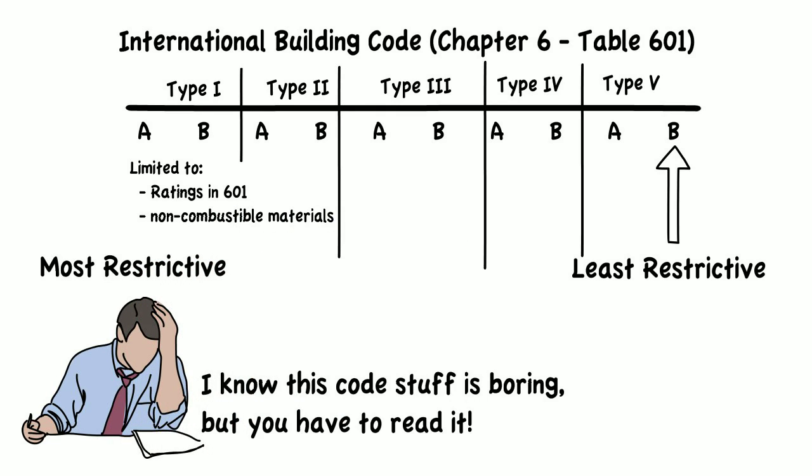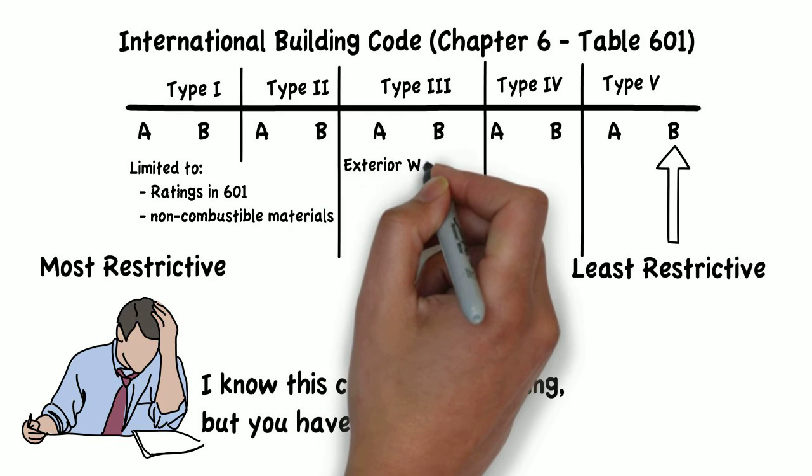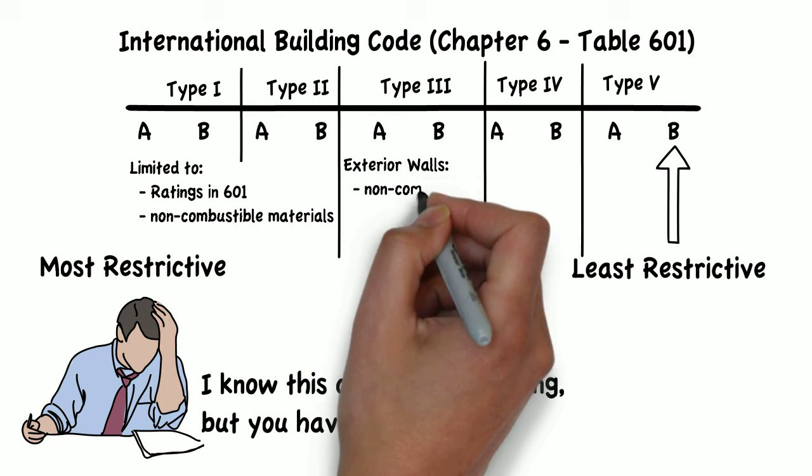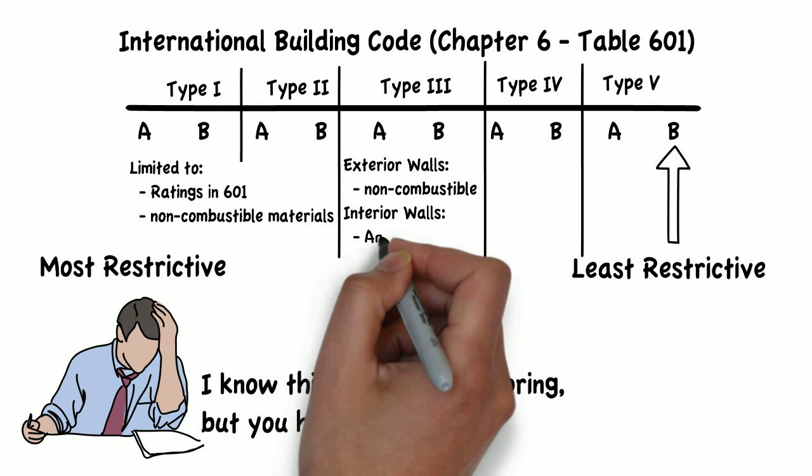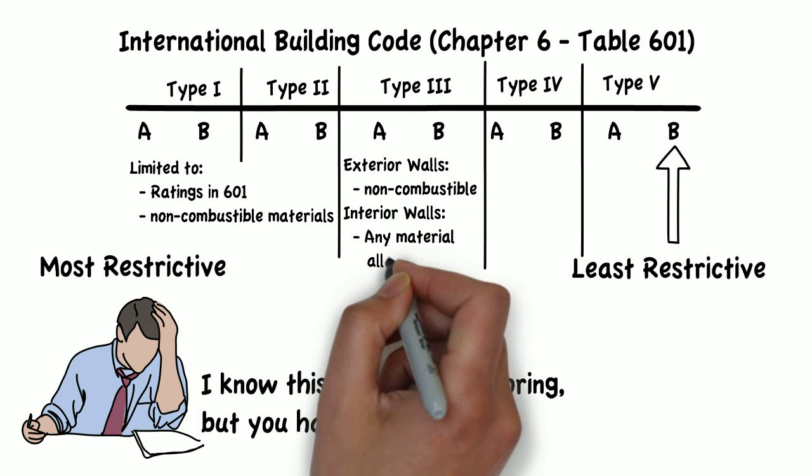IBC Section 602.3 tells us that Type 3 buildings have exterior walls of non-combustible materials and interior elements of any material permitted by the building code.